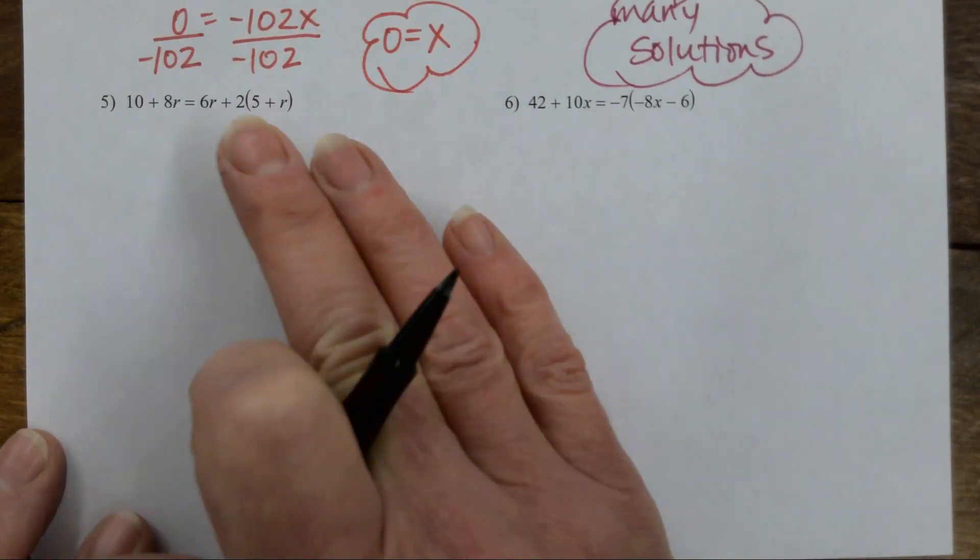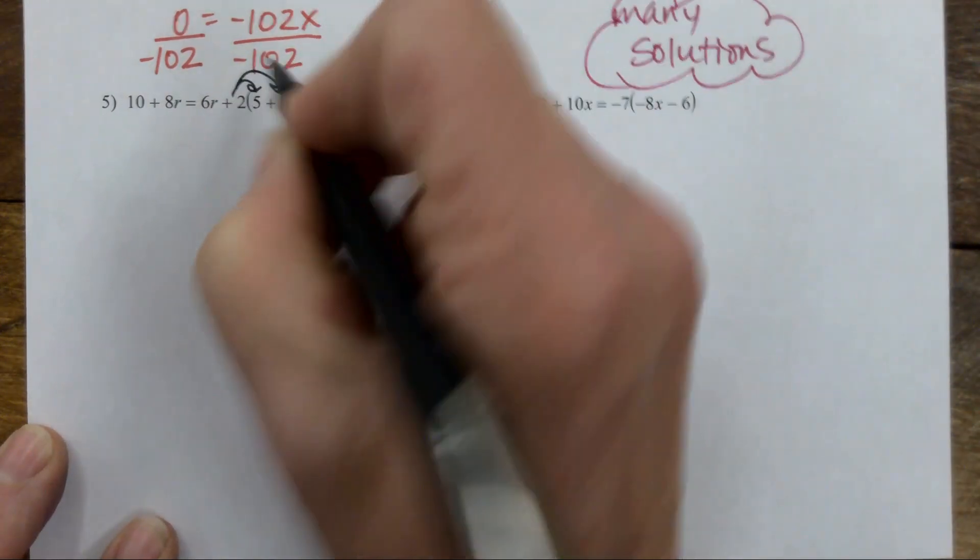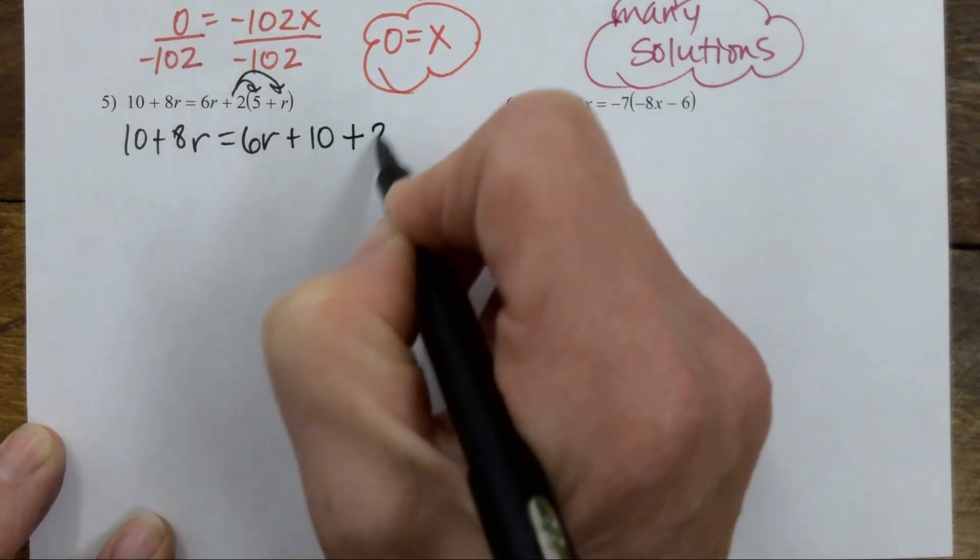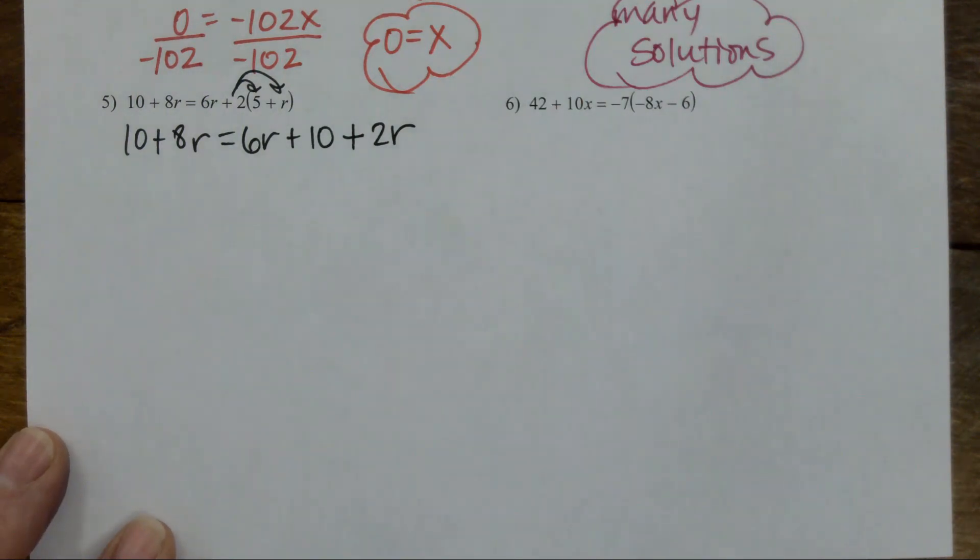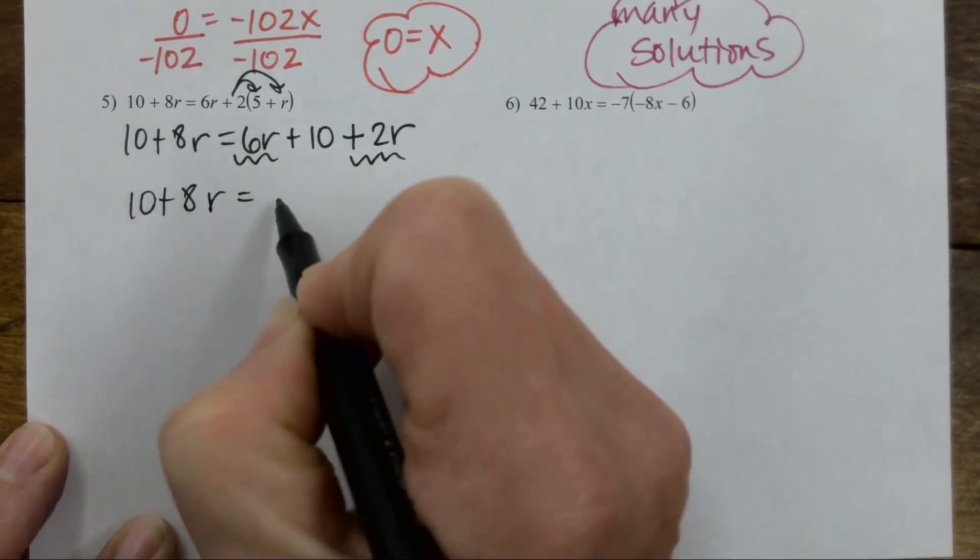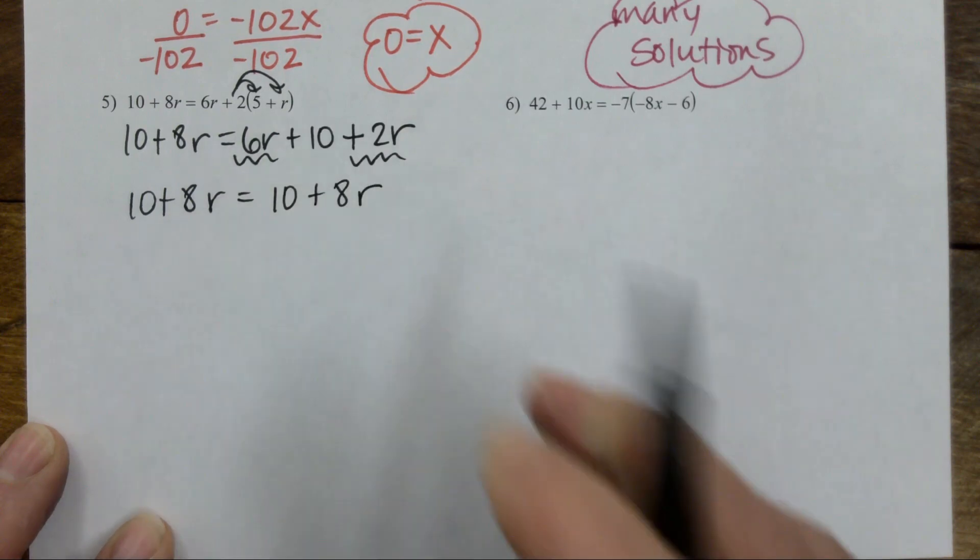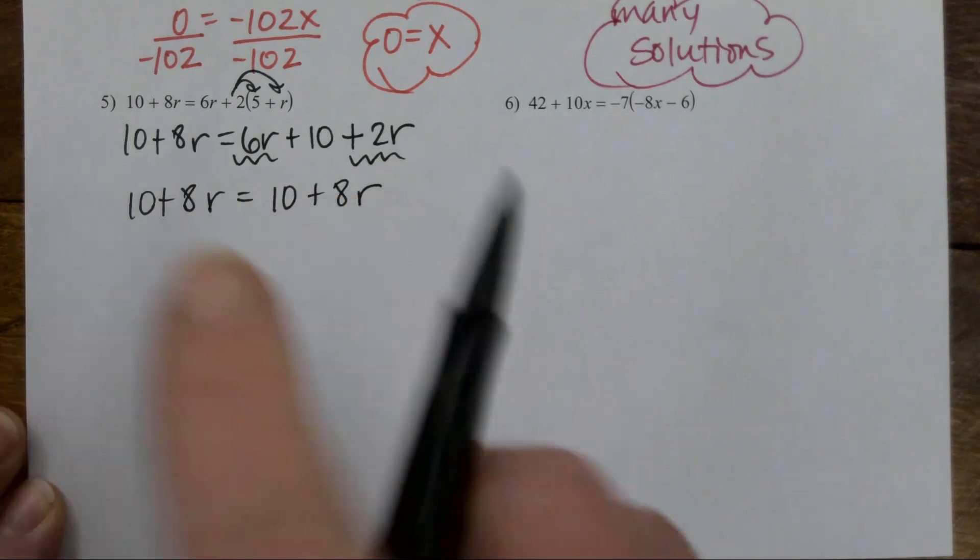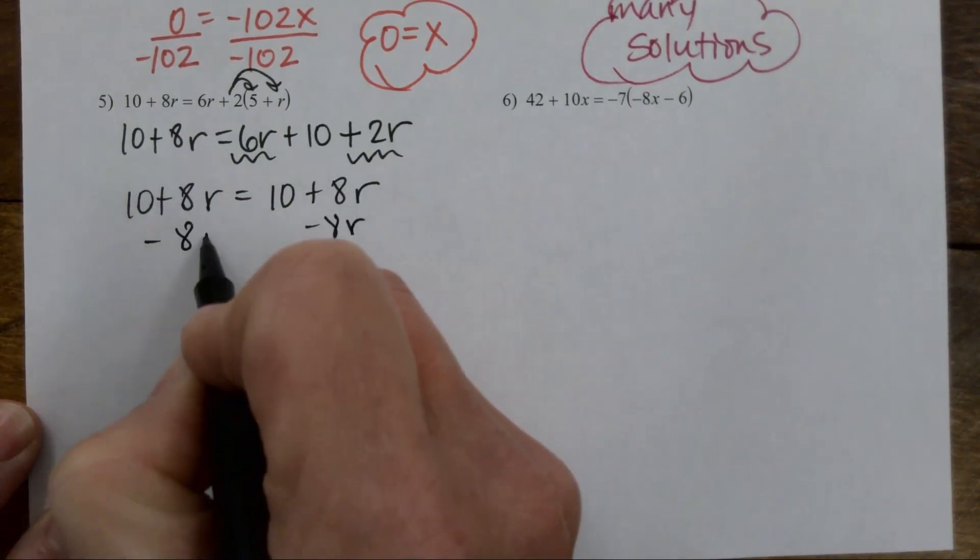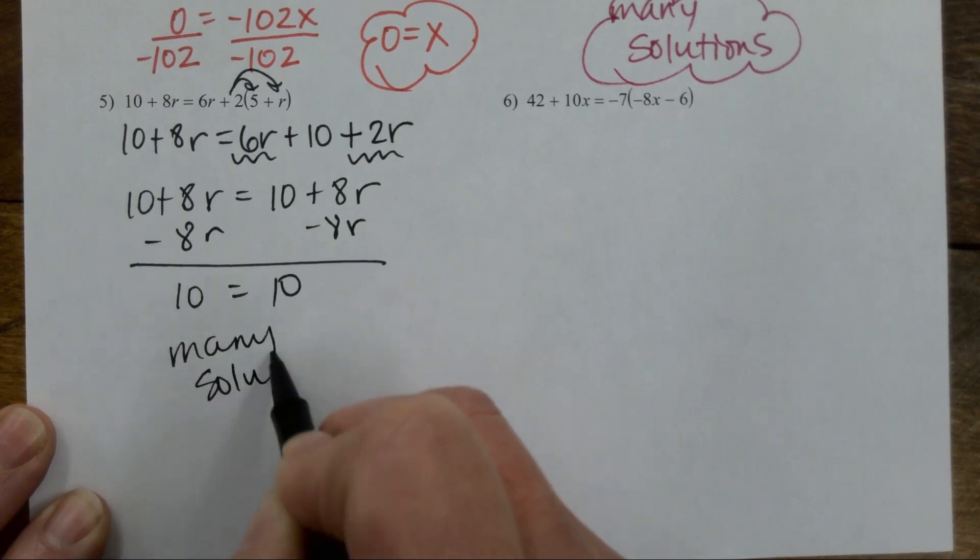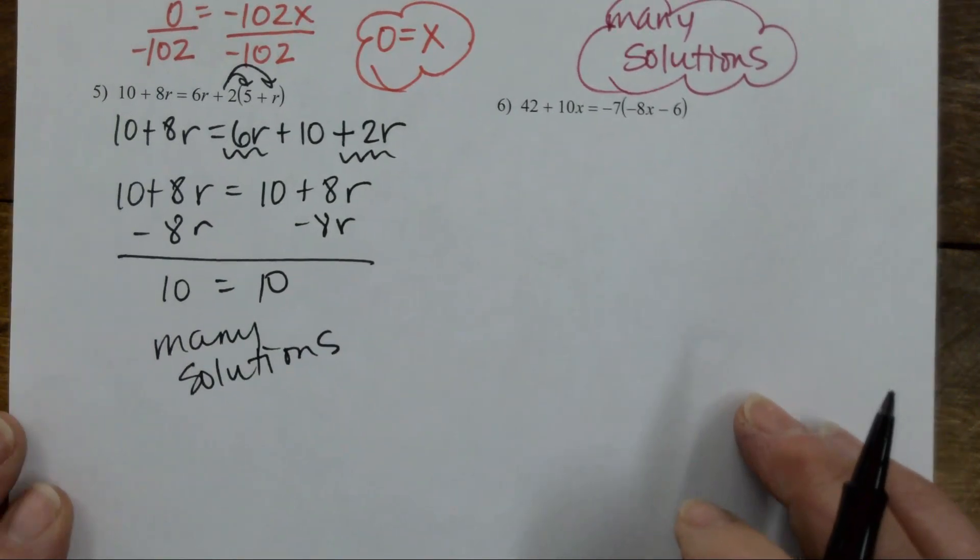Talk me through this one. What do I do first? Distribute. 10 plus 8r equals 6r plus 10 plus 2r. What next? Combine the like terms. So 10 plus 8r equals 10 plus 8r. Is anybody seeing something here? It's going to end up being a many. It's exactly the same on both sides, so when I subtract the 8r, which is my next move, I'll get 10 equals 10. Always true, many solutions. The way you solve it is reduce, reuse, and recycle, right? That's how you solve everything.